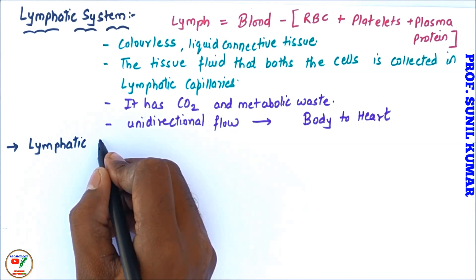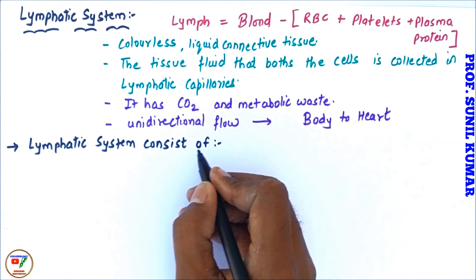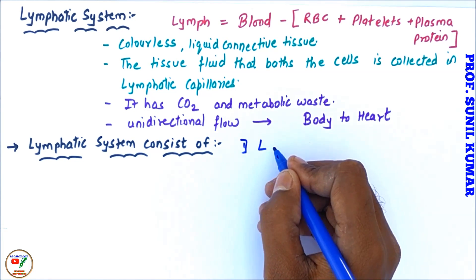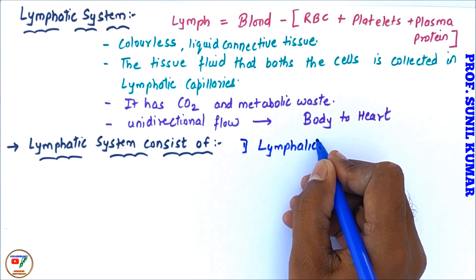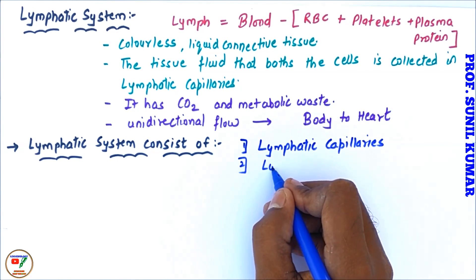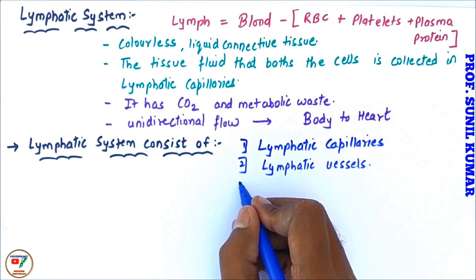It means it flows from body to the heart. So the lymph goes in all parts of the body and from there it goes into the heart. When you talk about the lymphatic system, what basically it consists of: lymphatic capillaries, lymphatic vessels or lymphatic ducts, and lymph nodes.